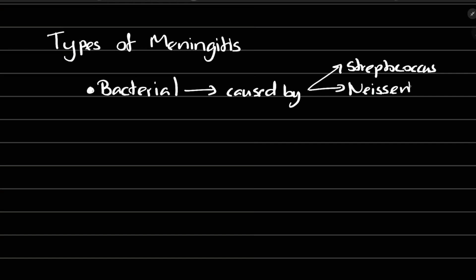Streptococcus, Neisseria, Listeria. These infections can spread to the brain via bloodstream from sinuses, ear, and throat.